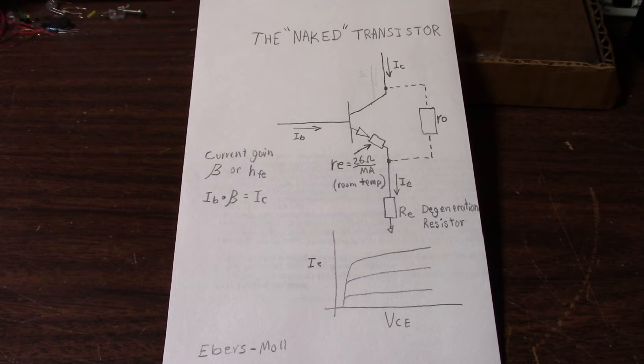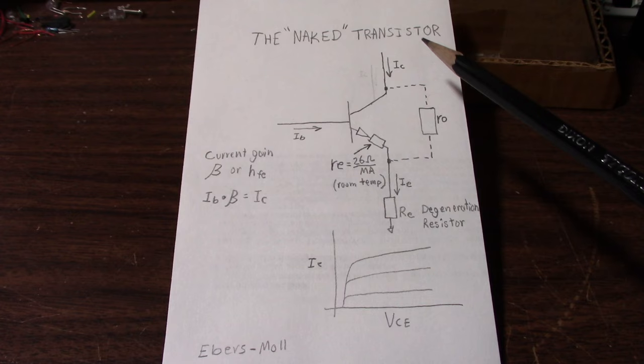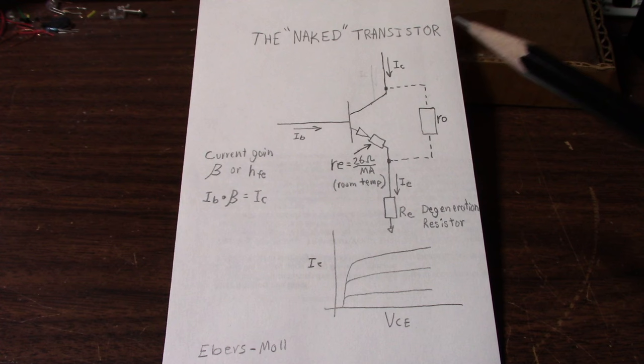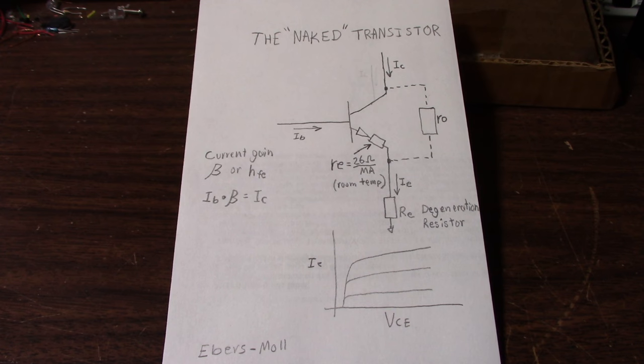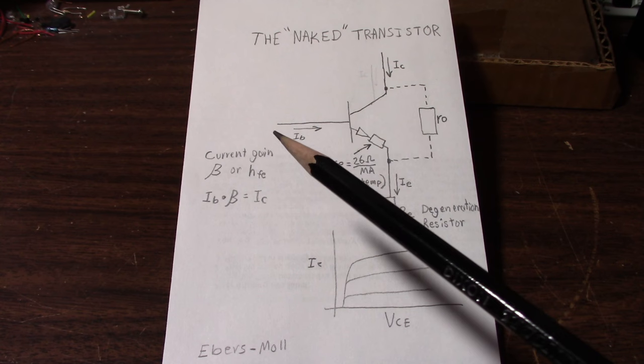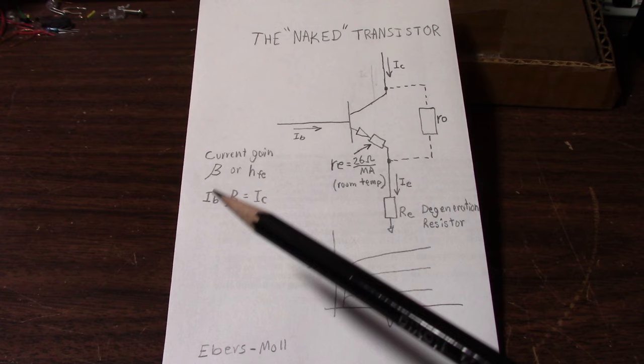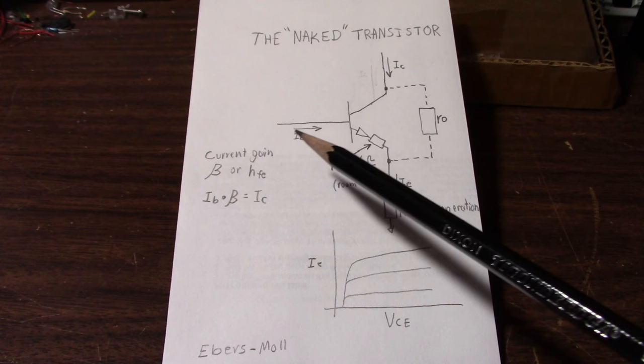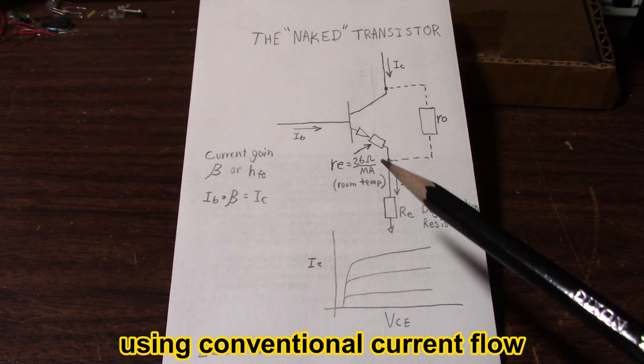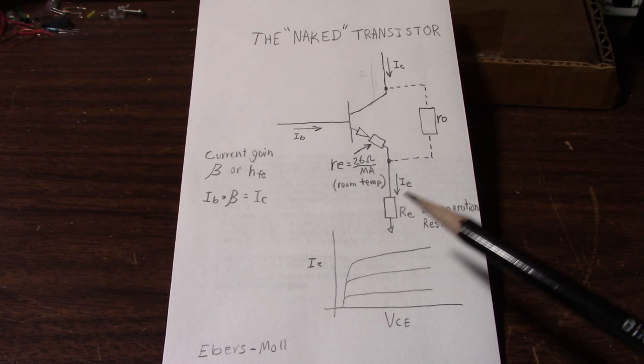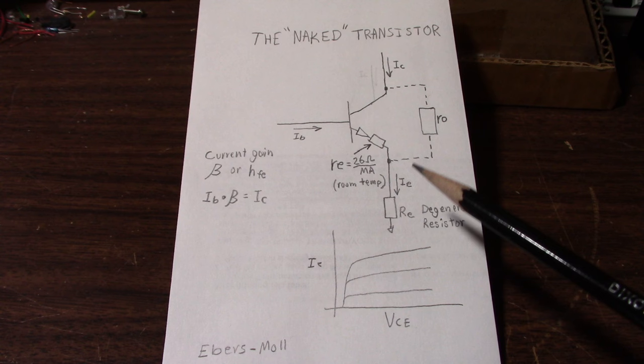I call this the naked transistor because if you cover up the emitter degeneration resistor here, we're left with the transistor that has physical properties that cause nonlinearities. Before I get into that, let's take a look at what's going on with the currents in the transistor. We put in a base current and if we multiply that by what's known as the beta, the current gain of the transistor, that'll give us the collector current. When the base current goes into the transistor it has to come out somewhere and it comes out the emitter. That's also true for the collector current. So the emitter current is simply the base current plus the collector current.